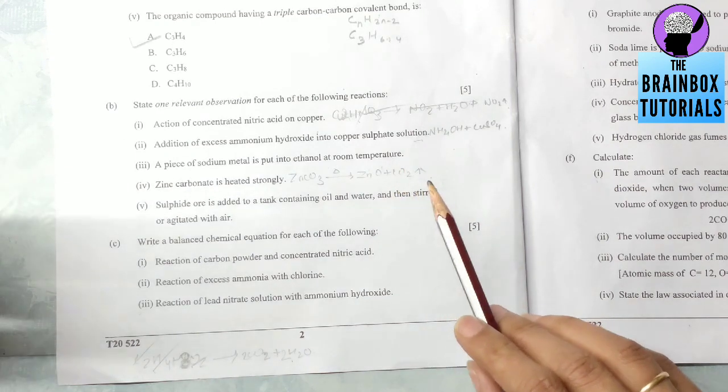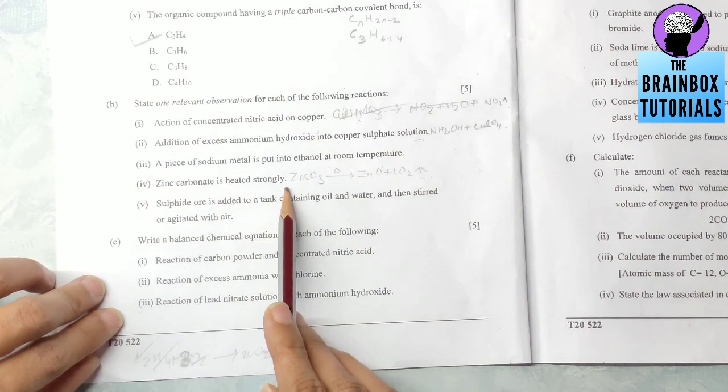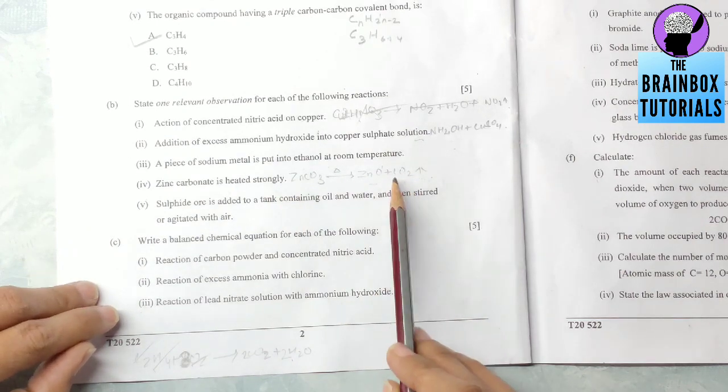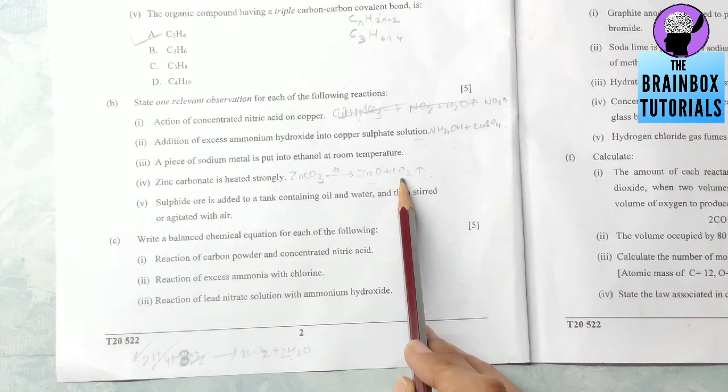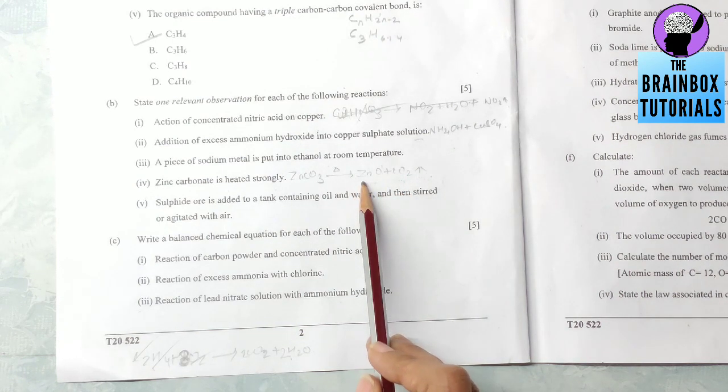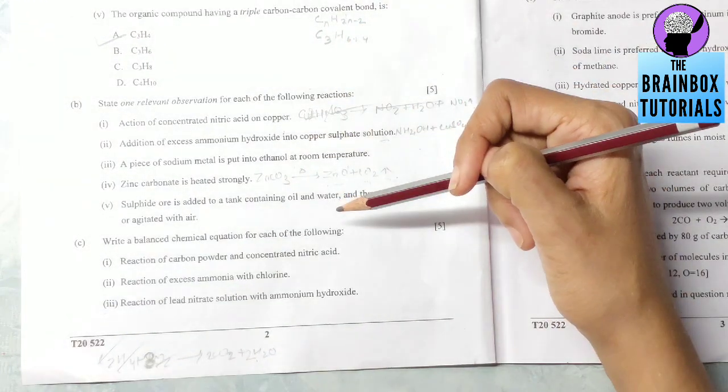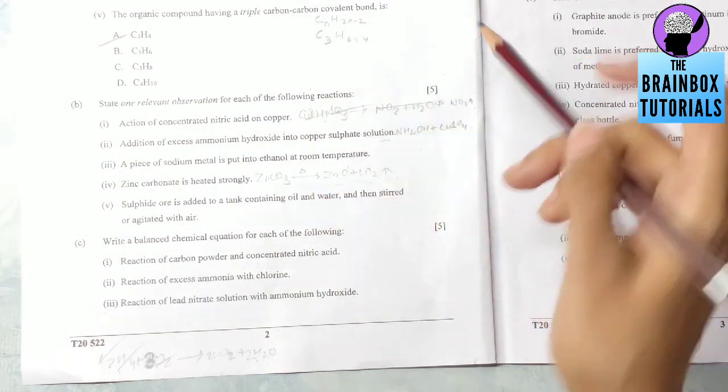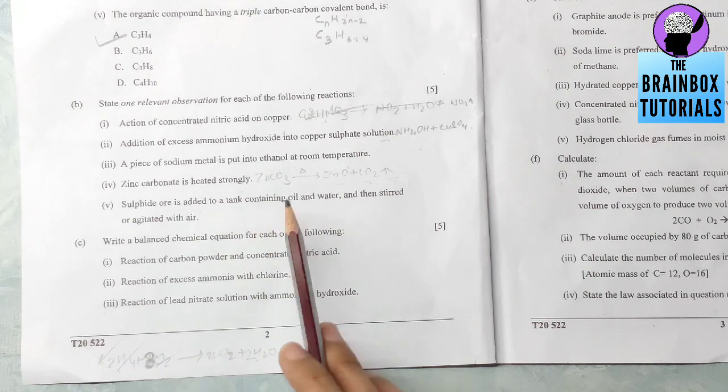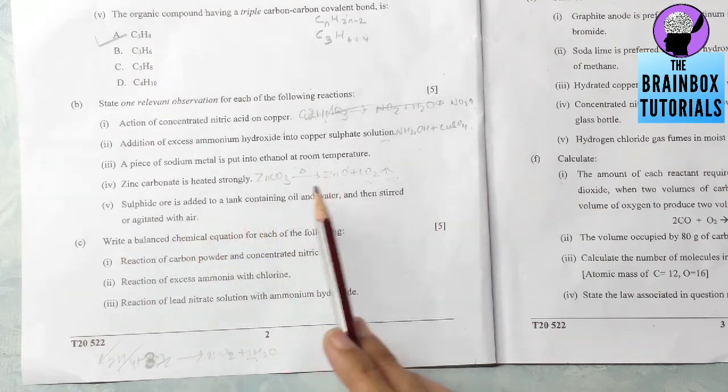Number four: zinc carbonate is heated strongly. Zinc oxide and carbon dioxide is formed, so you can write about carbon dioxide that a gas evolves which turns lime water milky. For zinc oxide you can write that a yellow powder is left which turns white when it cools down. Number five: sulfide ore is added to a tank containing oil and water and then stirred or agitated with air. This is from froth flotation. You will write that froth appears on the surface.